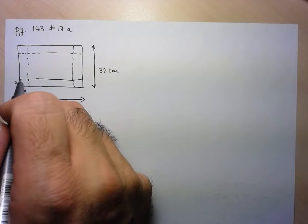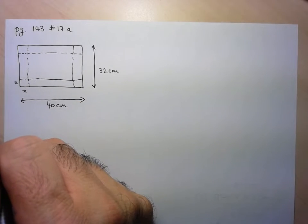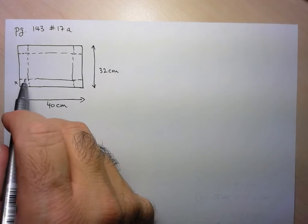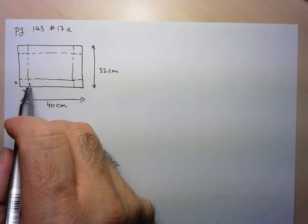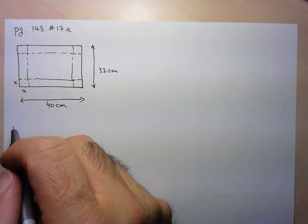Okay, these squares have been cut away. And what they want us to do is express the volume of the box as a function of this X, so I can cut off different sized squares to create different sized boxes.